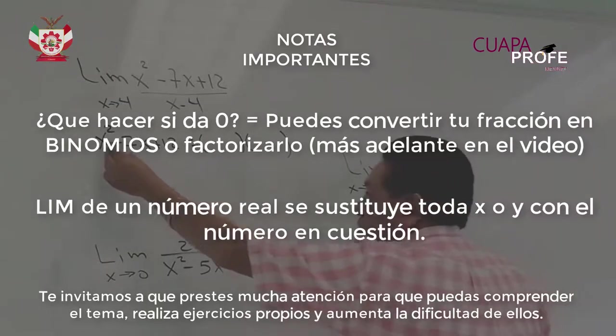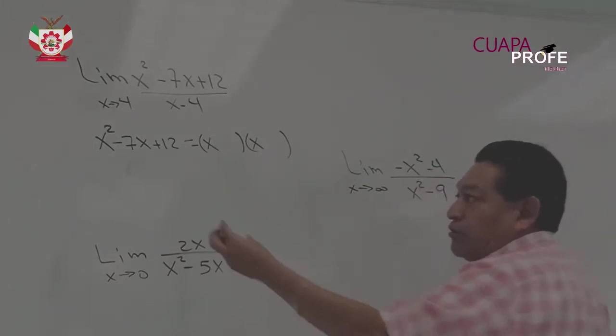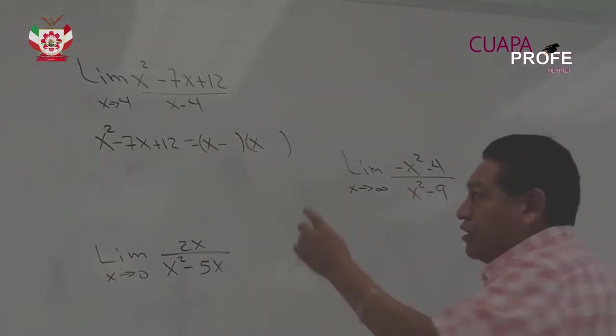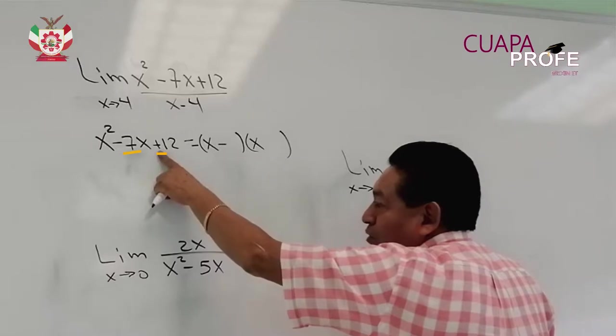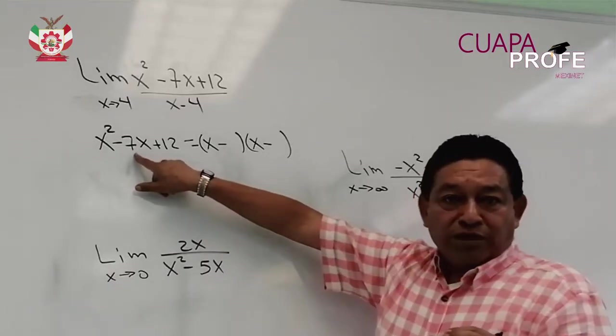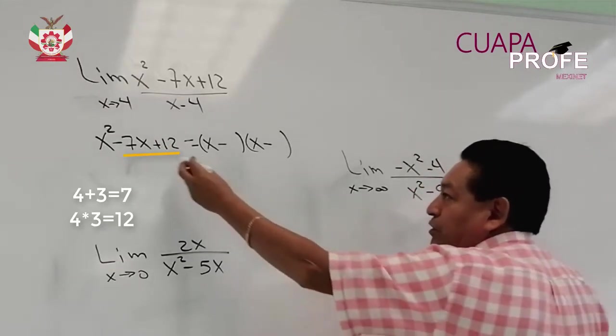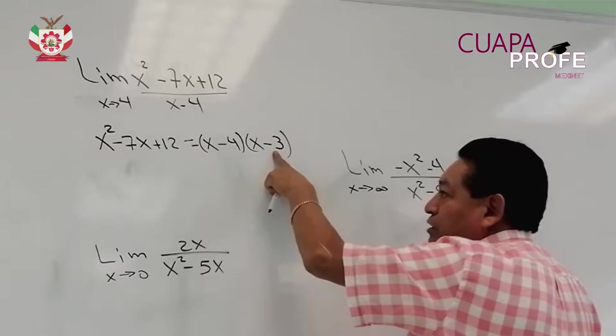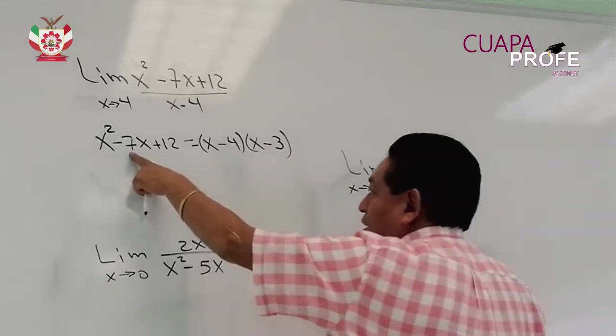Dos factores, la raíz cuadrada de x cuadrada es x, entonces tengo en un factor x y en el otro factor también x. El primer signo que aparece es menos y será el signo de mi primer factor. Para obtener el signo del segundo factor multiplicamos menos por el signo del tercer término, menos por más, me da menos. Y ahora buscamos dos números que sumados me den menos 7 y multiplicados más 12. Aquí puede ser 4 y 3. Menos 4 por menos 3 me da más 12, y al sumar menos 4 y menos 3 me da menos 7.